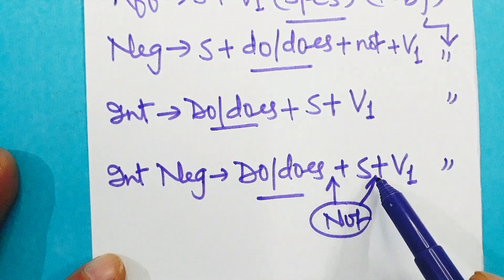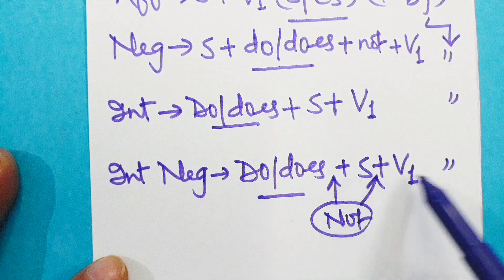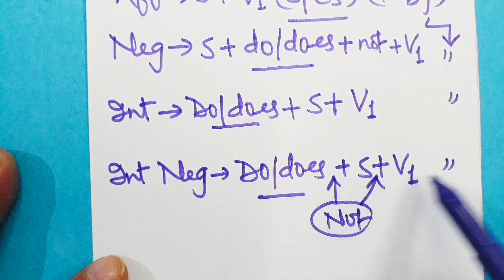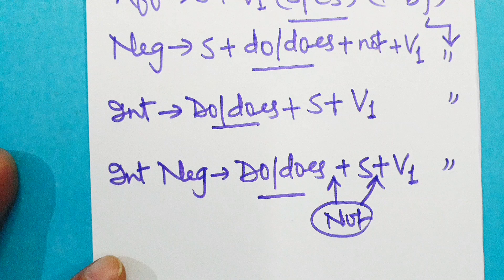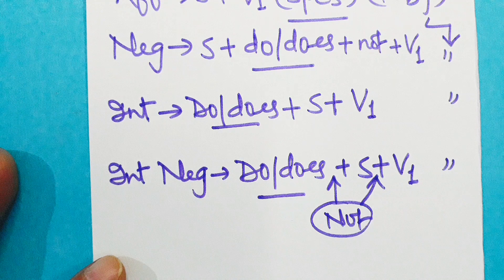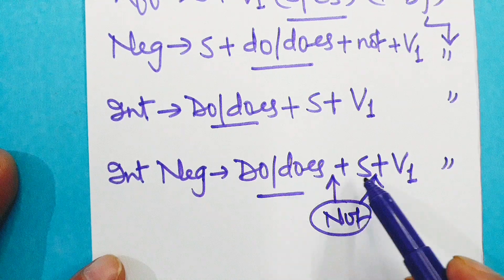Interrogative-negative: do or does plus subject plus V1, and not can be inserted either before the subject or after it. So don't they write a letter, or do they not write a letter? But the smarter approach is don't they write a letter. Not should be taken before the subject or with the auxiliary do or does. Don't they write a letter is smarter approach.